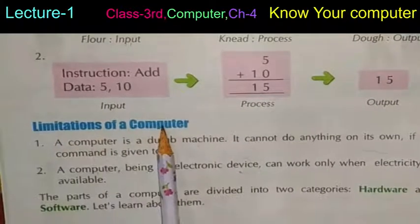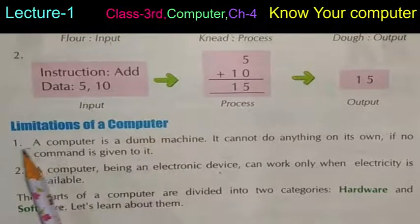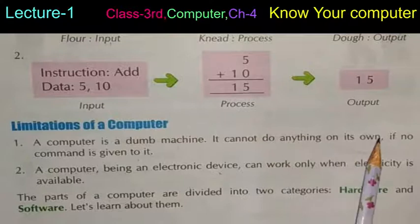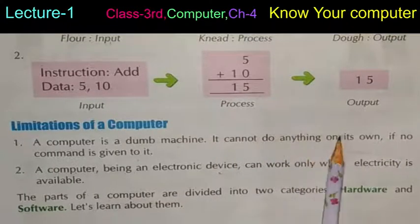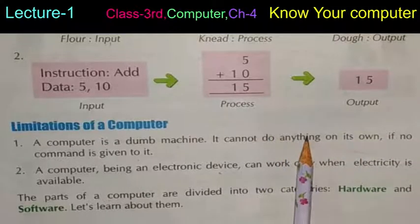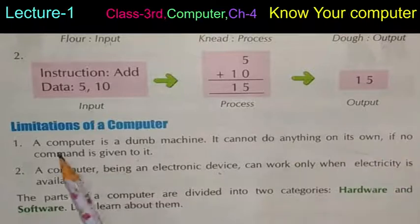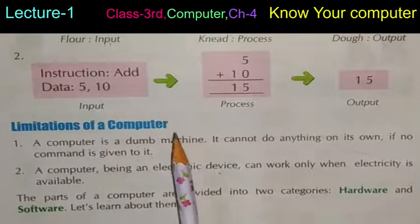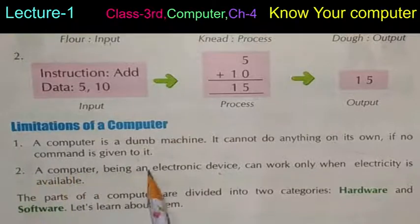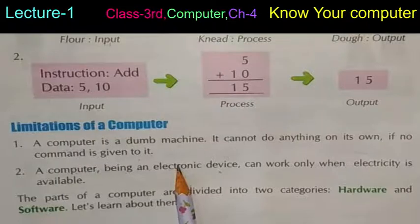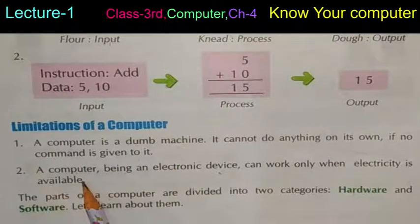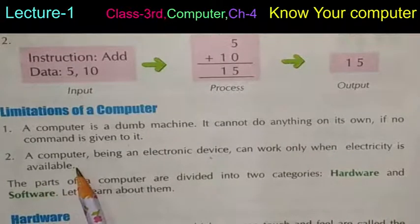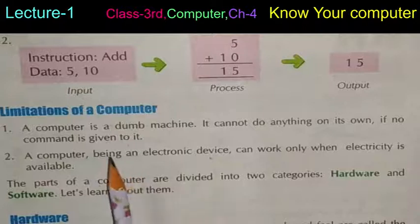Next, limitations of computers. A computer is a dumb machine — it cannot do anything on its own. Woh apna kaam apne aap se nahi kar sakta. If no command is given to it, it cannot perform any task. Also, a computer is an electronic device that can work only when electricity is available — agar electricity nahi hai toh computer work nahi karega. These are its limitations.